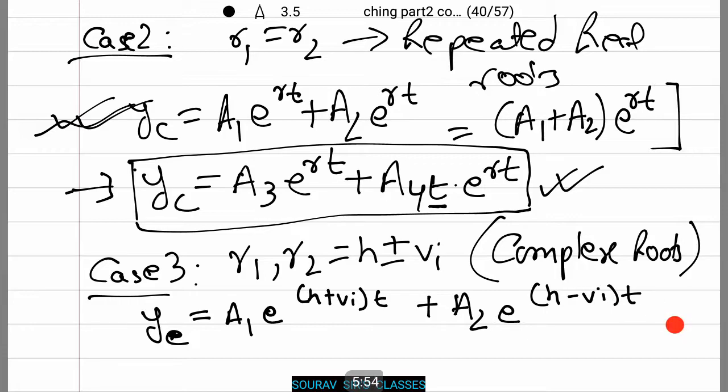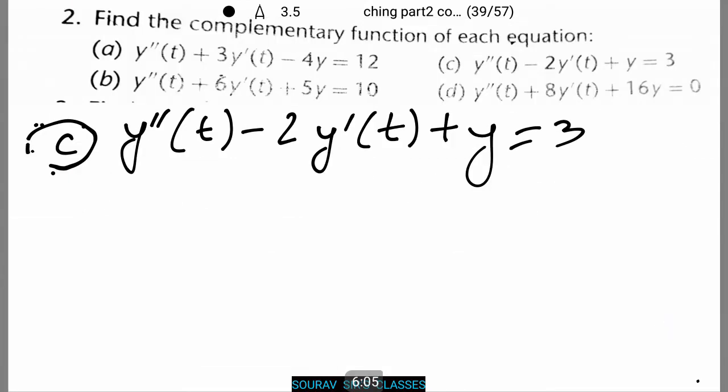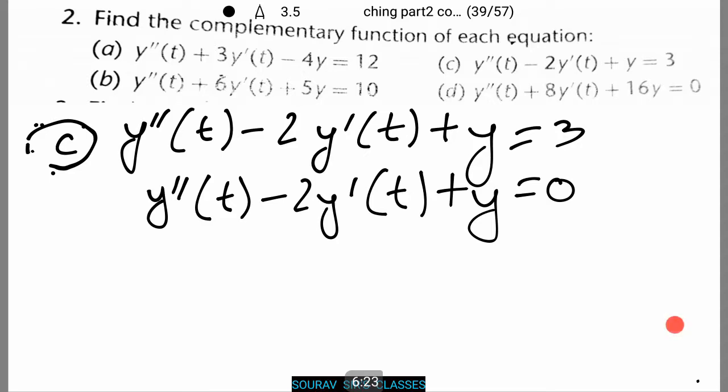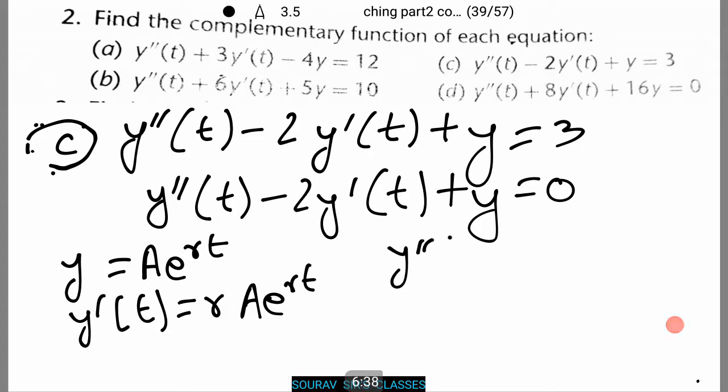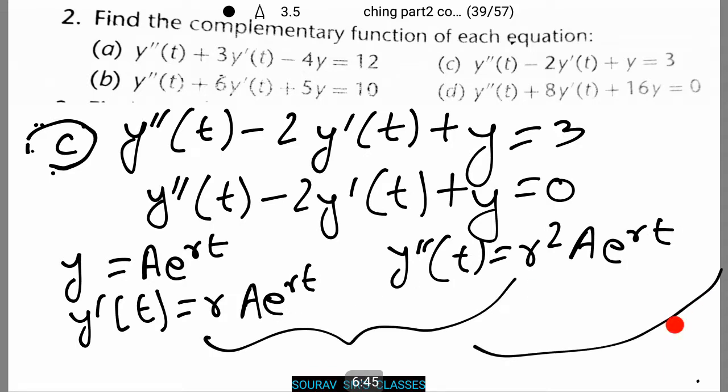Now let's jump into our very simple sum. We'll find the complementary function of number c. You can try the others on your own; I'll give the answer at the end of this video. We'll take the homogeneous form: y double dash(t) minus 2y dash(t) plus y equals 0. We'll use trial solution, that is y equals Ae to the power rt, y dash(t) equals rAe to the power rt, and y double dash(t) equals r squared Ae to the power rt. Now we'll substitute all these values in our homogeneous equation.